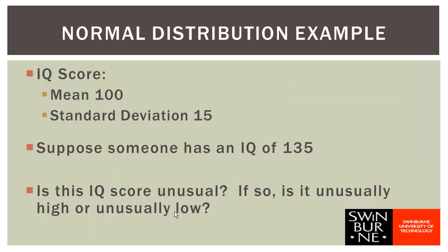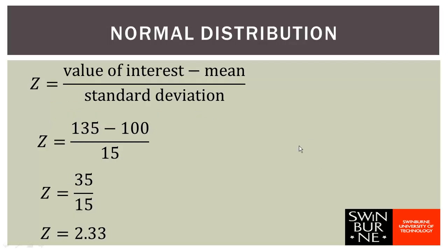Let's look at an example using IQ scores. The mean IQ is 100, the standard deviation is 15, and IQ scores are normally distributed. Suppose someone had an IQ of 135 - is that unusual? We can answer this by calculating the Z-score: value of interest minus mean, divided by standard deviation. So 135 minus 100 equals 35, and 35 divided by 15 gives us 2.33. That Z-score is higher than 2, which means this is an unusual value. And since it's a positive Z-score, it's an unusually high value - this person had an unusually high IQ.